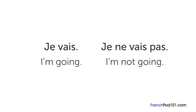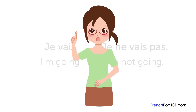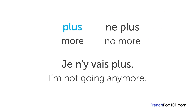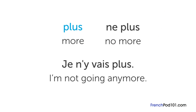You can make more complex negative sentences by using ne with different negative words. Let's go over some examples so you can learn how to make negative sentences in French correctly. Plus on its own usually means 'more,' but together with ne, the phrase becomes 'no more.' For example, je n'y vais plus means 'I'm not going anymore.'